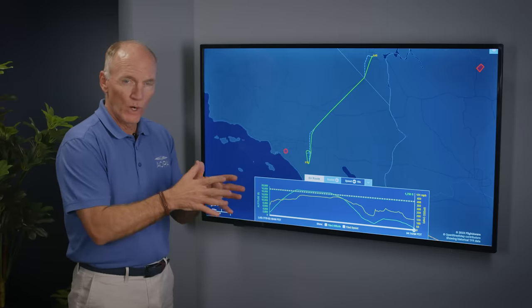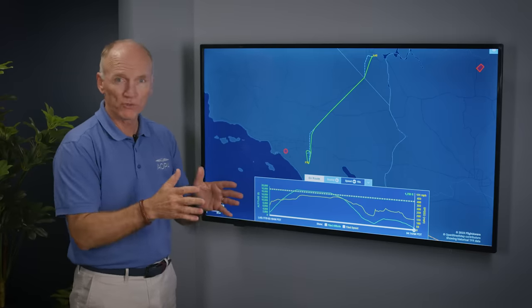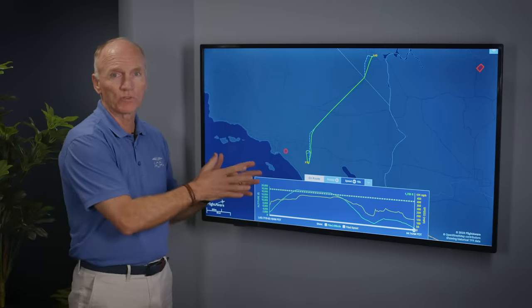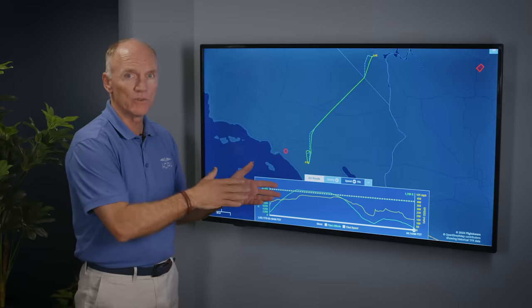The aircraft departed Las Vegas at about 3:15 a.m., flew about an hour en route to French Valley. The pilot made one attempt at an approach, went missed approach, flew the published missed approach, came back around for a second approach, and continued the descent into the ground and crashed. All six people aboard the aircraft died.